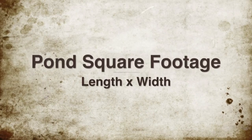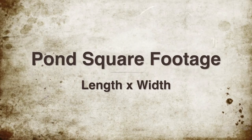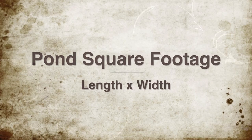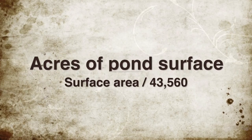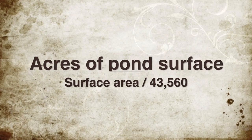In order to correctly apply the rotenone, you must first calculate the square footage of the surface of your pond. This can be done using satellite imaging to approximate the length and width. Then, in order to convert square feet to acres, divide that value by 43,560.